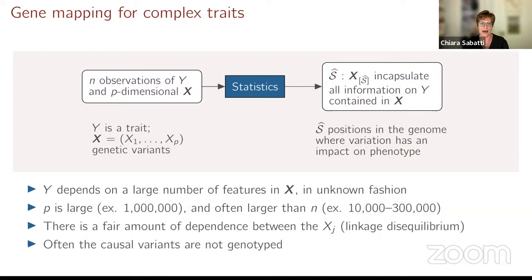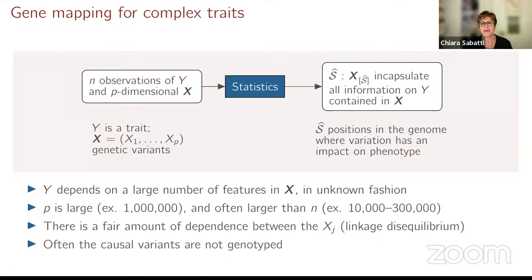The number of genetic loci for these goals are in the hundreds of thousands. We process this information on one outcome y and a large number of possible exploratory variables x, trying to find which genetic loci have information about the possible value of the outcome. From the statistical point of view, there is a fair amount of dependence between different features, even though only at the local level. Features sitting together in the genome tend to be dependent, while those far apart tend to be independent. Importantly, the causal mechanistic variants that affect the trait might not actually be genotyped or measured, and we need to detect their effect through nearby variants.